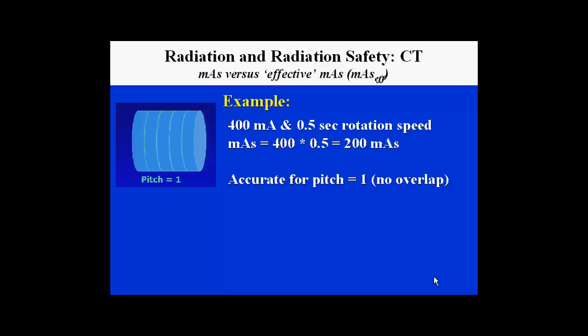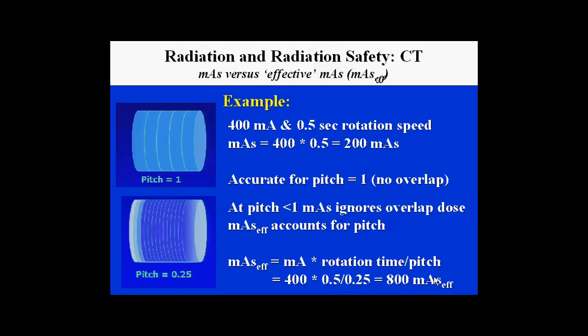For example, at a pitch of one — a direct overlap where the scanner Z-width per rotation equals table movement — with a 400 mA setting and 0.5 second rotation, the mAs is 200. However, at a pitch of less than one, as in cardiac CT, mAs ignores helical overlap. Therefore, mAs effective accounts for pitch: it equals mA times rotation time divided by pitch. At one-quarter pitch, the mAs effective becomes 800 — four times higher — significantly increasing radiation dose.